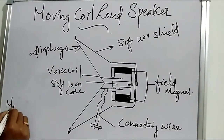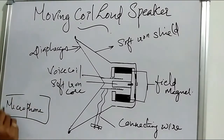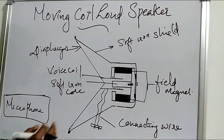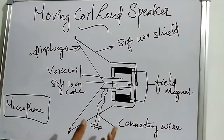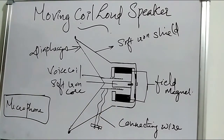Now, regarding the microphone: the microphone converts sound waves into electrical signals. Sound waves enter the microphone, and electrical signals are emitted from it.